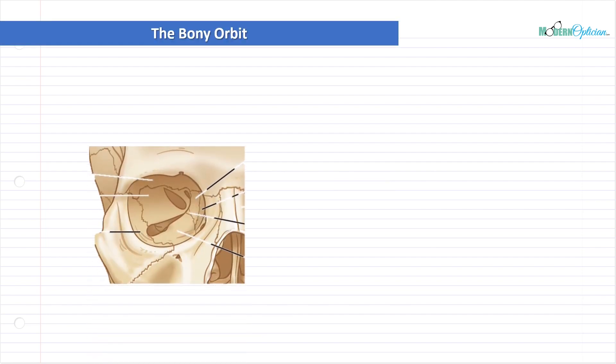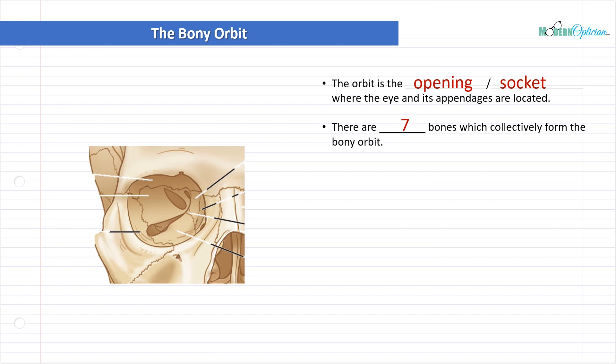Let's take a look at the bony orbit. So here's a picture of the skull with all these lines coming from it, because we're going to label a few of these things. And I don't want you to stress out because sometimes when we go through some of these things, there's a lot of Latin terms, a lot of weird names. And I don't expect you to remember all these things, but I just want you to understand the general structure of the bony orbit and understand that it's multiple bones fitting together and they all kind of play their own little part. The orbit is the opening slash socket where the eye and its appendages are located. There are seven bones which collectively form the bony orbit.